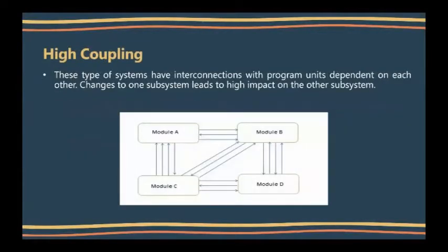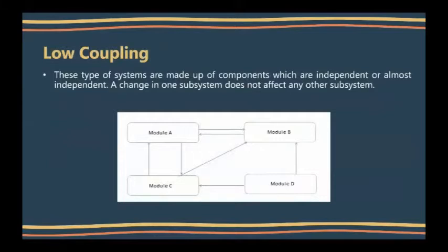There are various types of coupling. High coupling: this type of system has interconnections with program units dependent on each other. Changes to one subsystem lead to high impact on the other subsystem. Low coupling: this type of system is made up of components which are independent or almost independent. A change in one subsystem does not affect any other subsystem.